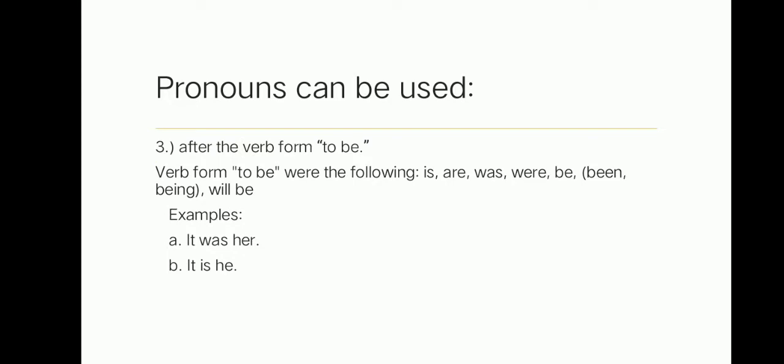Pronouns can be used after the verb form to be. The verb forms to be include: is, are, was, were, be, been, and being. The first example is: it was her. Her is a pronoun which is used after the verb form to be, which is was. Another example is: it is he. He is a pronoun which is used after the verb form to be, which is is. Okay, are you clear, guys? Do you have a question?